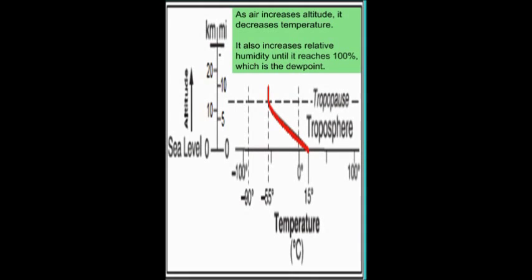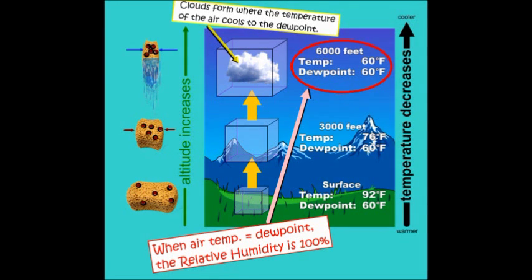As air increases in altitude, it decreases in temperature. This means that it also increases in relative humidity until it reaches 100%, which is the dew point.